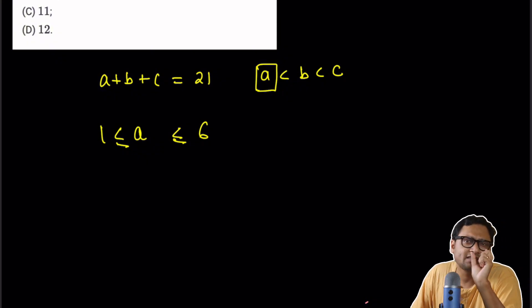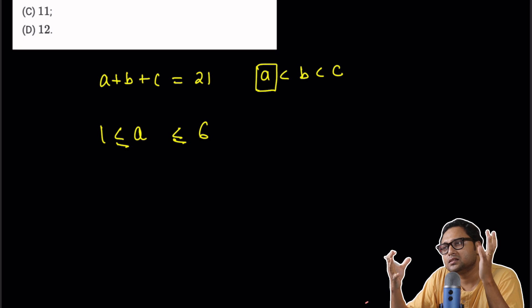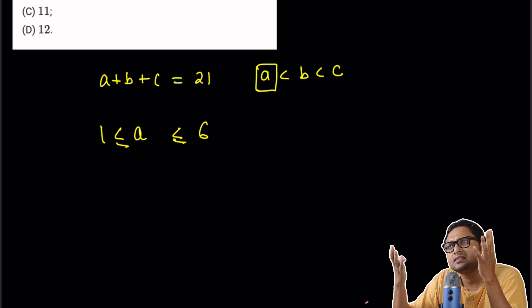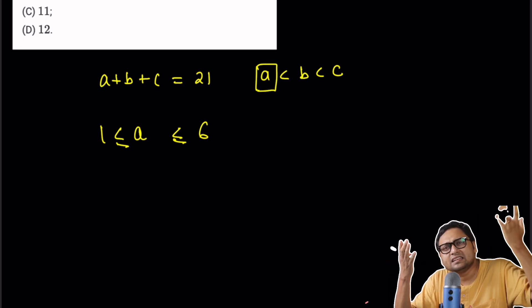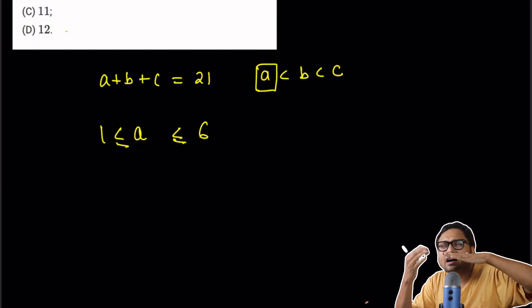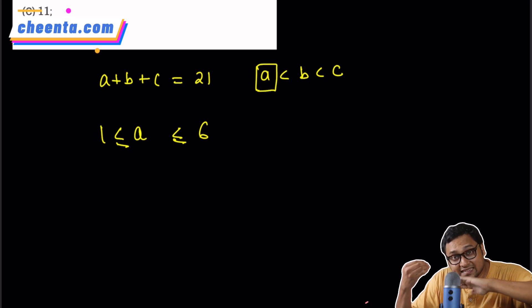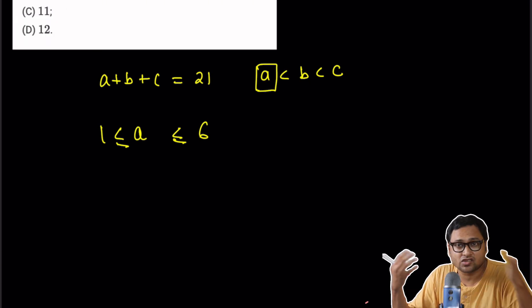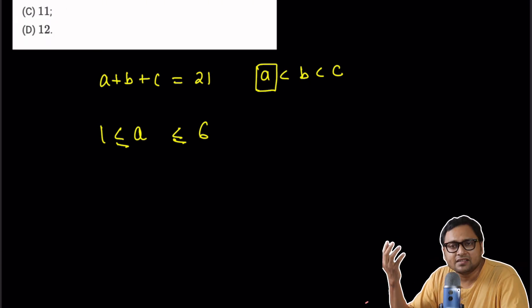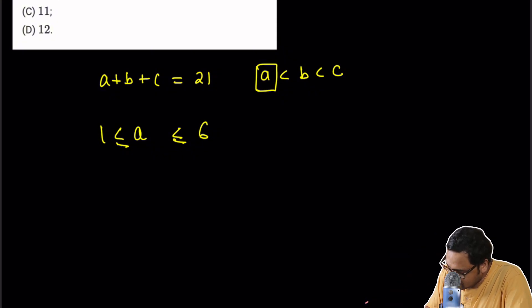B plus C is 14 because the total is 21. So if B plus C is 14, then one of them must be at least 7 or more, right? But we now know that then the other one is 7 or less. That means less than A or equal to A, which cannot happen. You can convince yourself that A cannot be 7 or more. So we have to check all of these 6 cases.